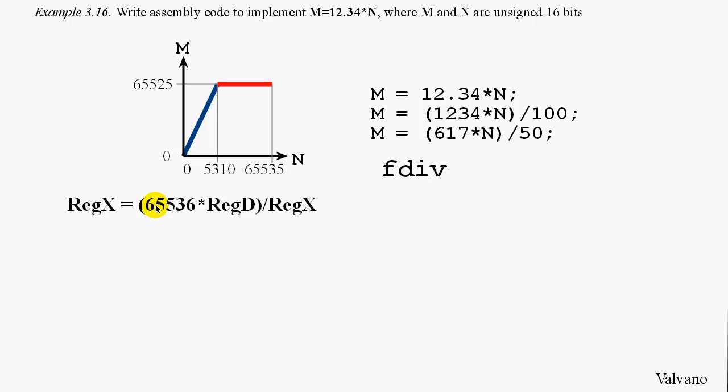Remember, FDIV is equivalent to this operation: Register D multiplied times 65535 divided by register X. That quotient is stored back into register X.